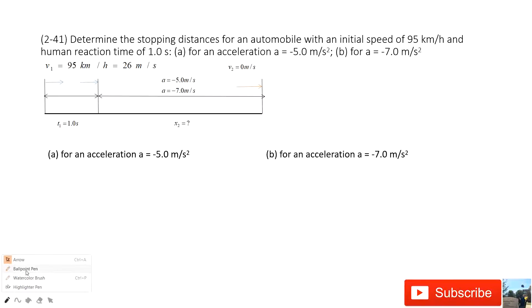First, let's look at the keywords and we can draw a picture to see what happens. It tells us to determine the stopping distance for an automobile with its initial speed of 95 km per hour. We can convert it to meters per second. The unit must be international system unit.